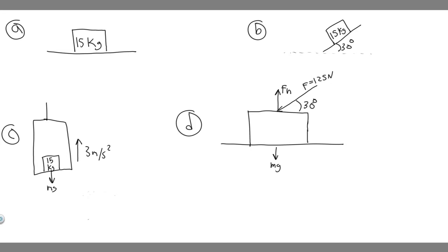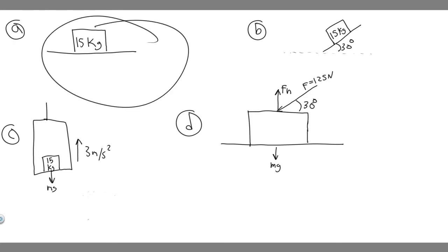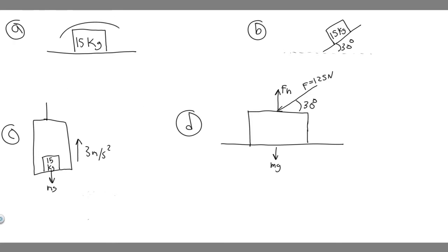According to Newton's third law, for every action there's an equal and opposite reaction. If you put your hand on a table, you're applying some force on that table, and the table pushes back with a normal force. So the normal force is just the force that something exerts back at whatever's touching it. The first thing you always want to do is draw a free body diagram, which means label the forces on your drawing.